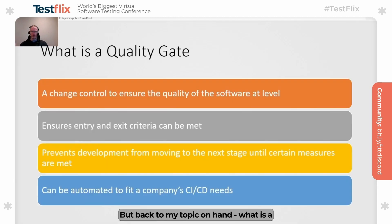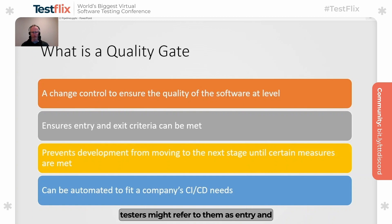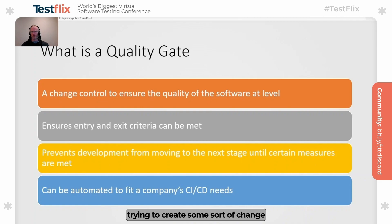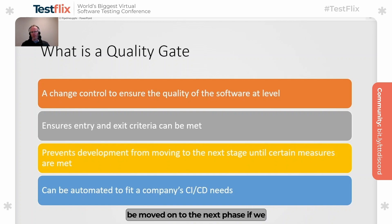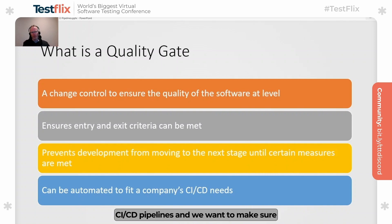But back to my topic on hand — what is a quality gate? This might be a new sort of thing to some people. Some testers might refer to them as entry and exit criteria when it comes to testing. But essentially, the big thing we're trying to focus on with quality gates is trying to create some sort of change control or automated measure which can assess that the quality of the software is ready to move on to the next phase. That's essentially what it does.